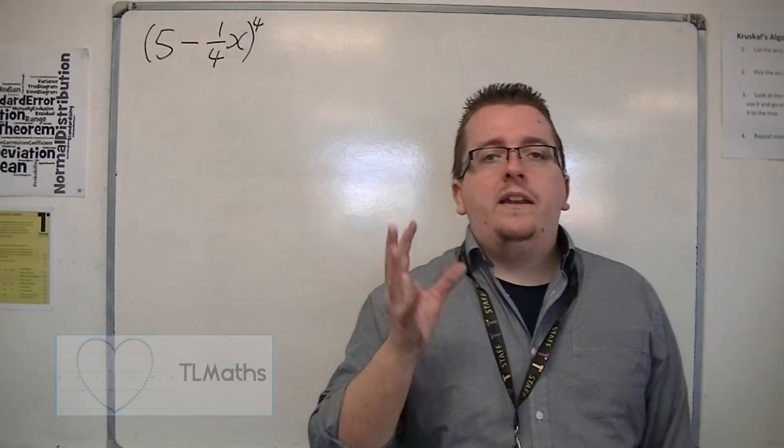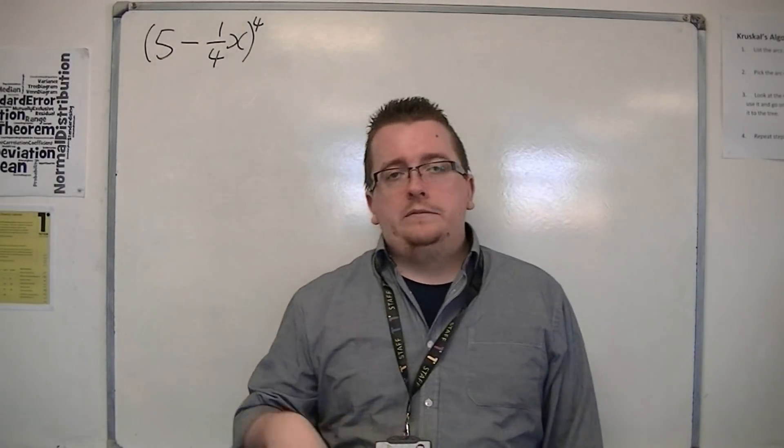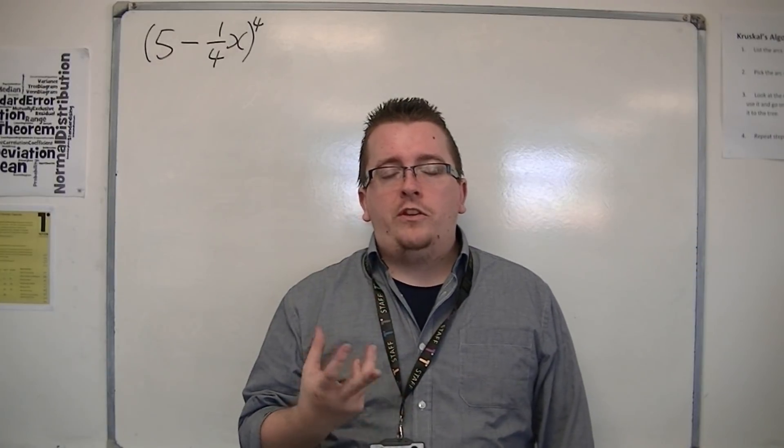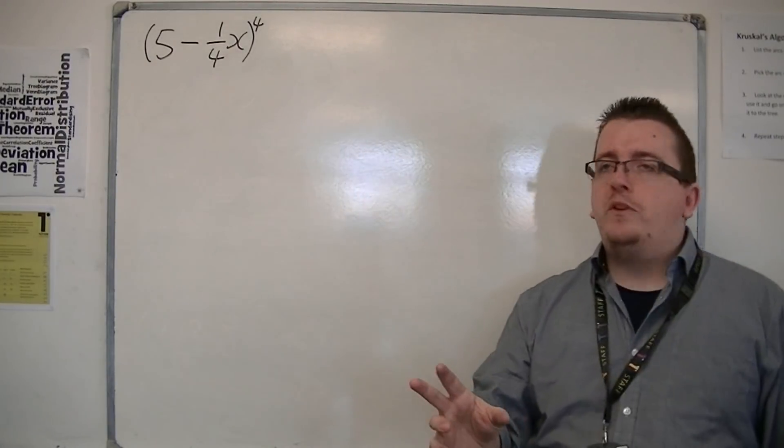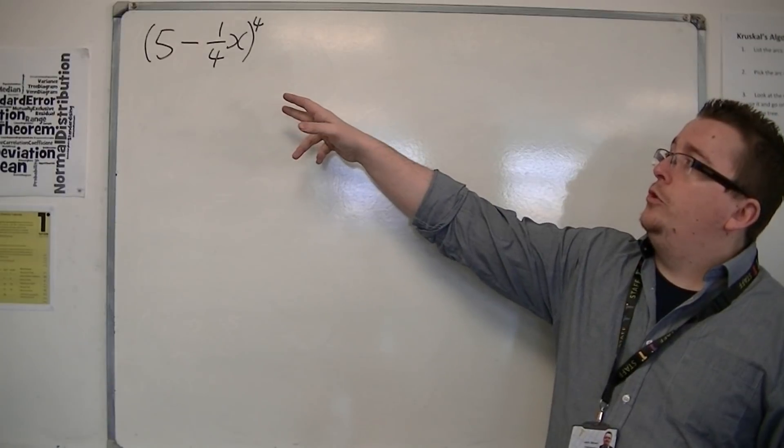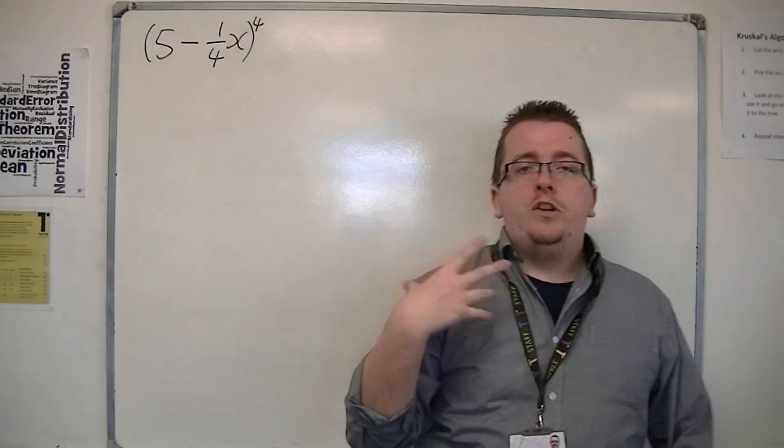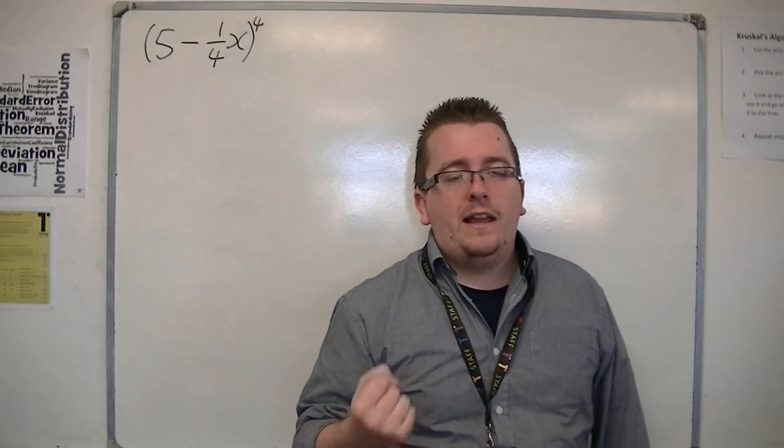So we've seen a couple of examples now where we've been using binomial expansion using Pascal's triangle. I'm going to show you another example: 5 take away a quarter x to the power of 4. I'm going to show you how you can do this relatively easily and quickly.